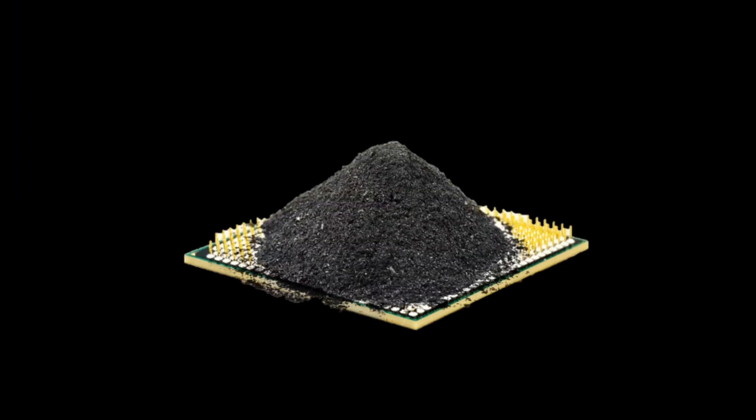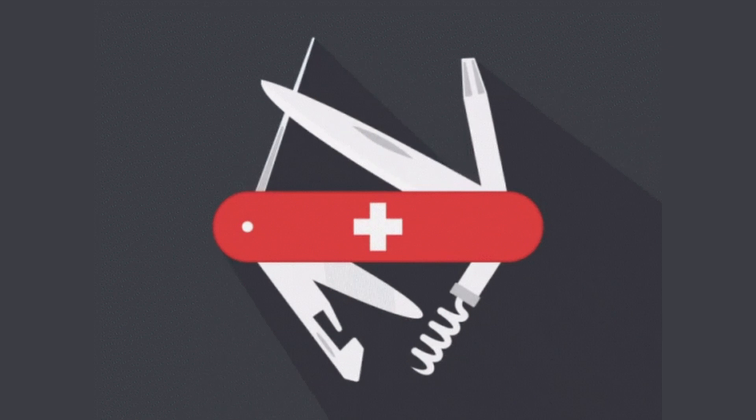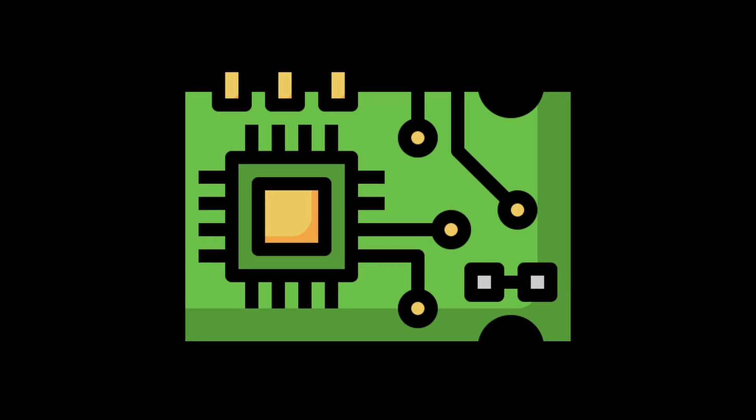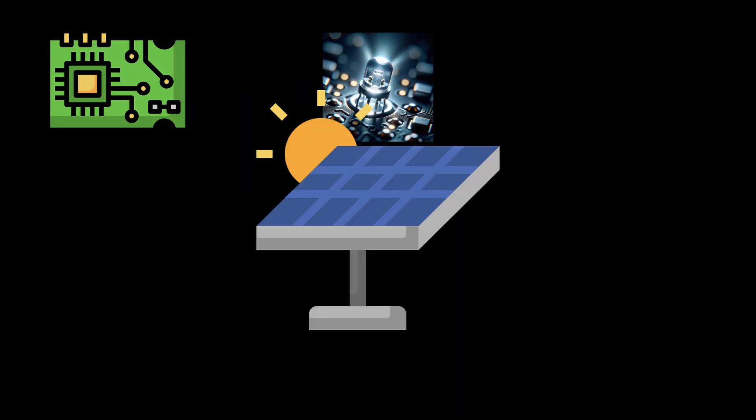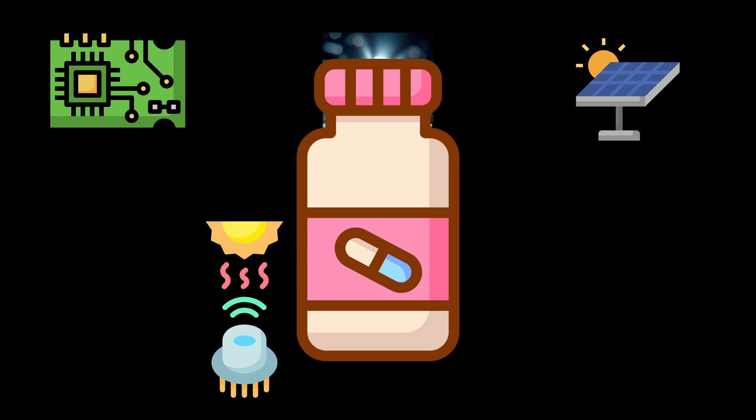All of these unique properties make black phosphorus an incredibly promising material in a variety of fields, including electronics, optoelectronics, solar cells, photodetectors, sensors, and biomedicine.